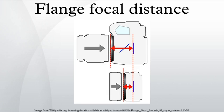For an interchangeable lens camera, the flange focal distance, flange focal length, or register, depending on the usage and source, is the distance from the mounting flange to the film plane.